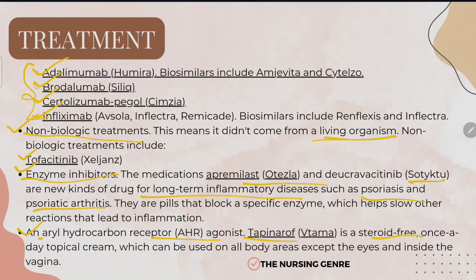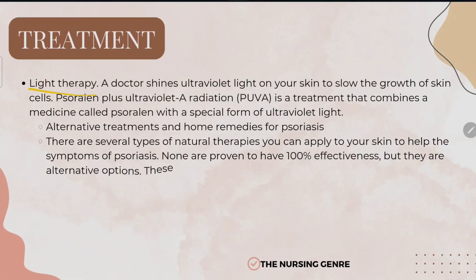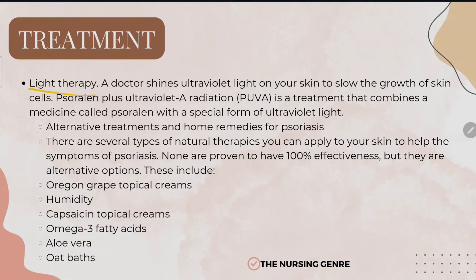Steroid-free topical creams can be applied to psoriasis-affected areas of the body. Light therapy involves the doctor shining ultraviolet light on the skin to slow the growth of abnormal skin cells. PUVA — psoralen plus ultraviolet A radiation — is a treatment that combines a medicine called psoralen with a special form of ultraviolet light.